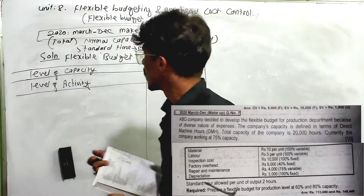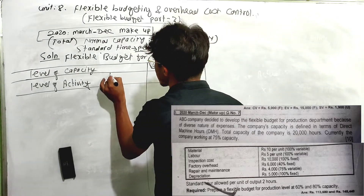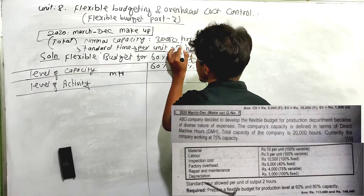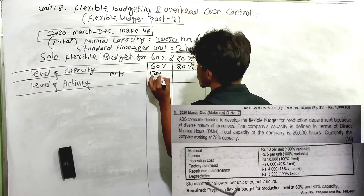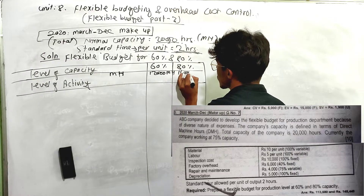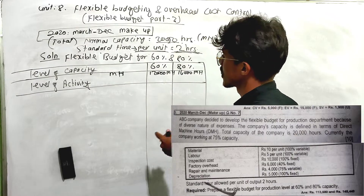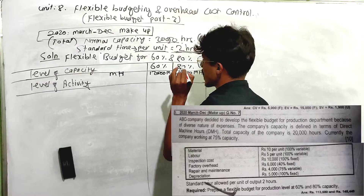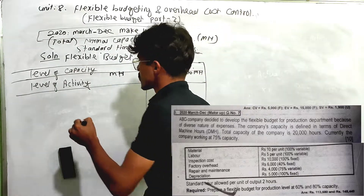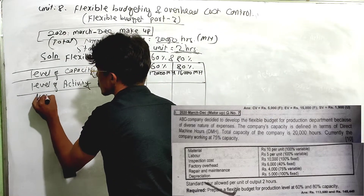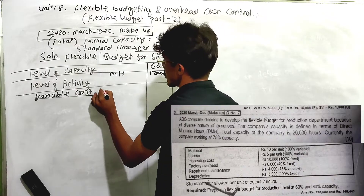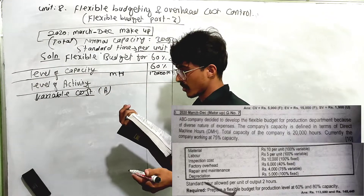Now let us build the flexible budget. The level of activity: 100% total capacity is 20,000 hours; 60% capacity is 12,000 hours; and 80% capacity is 16,000 hours. We separate variable costs and fixed costs accordingly.